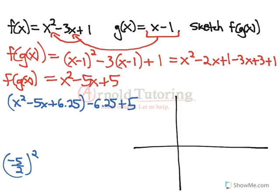Fairly straightforward. The reason I did that is because this simplifies now into x minus 2.5 all squared minus 6.25 plus 5 is minus 1.25. So this is my function x minus 2.5 all squared.